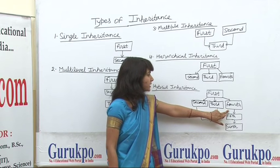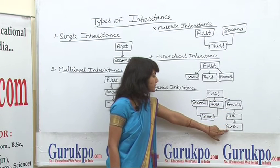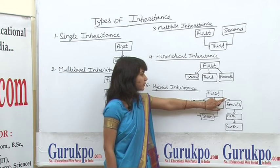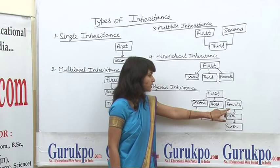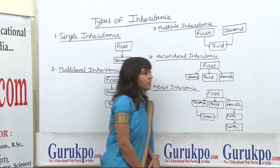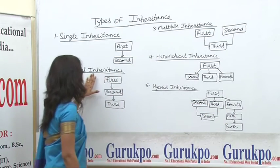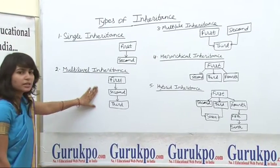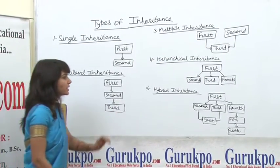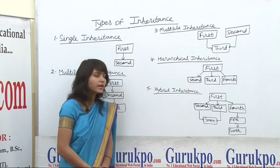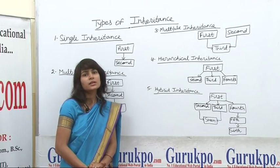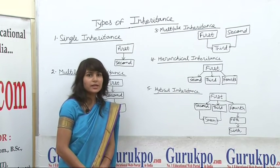And on this side, the fourth, fifth, and sixth classes show the feature of multilevel inheritance. Hence we can see in this example that three types of inheritance are used within hybrid inheritance.